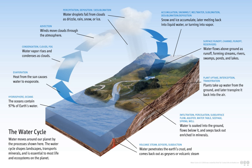The sun, which drives the water cycle, heats water in oceans and seas. Water evaporates as water vapor into the air. Some ice and snow sublimates directly into water vapor.